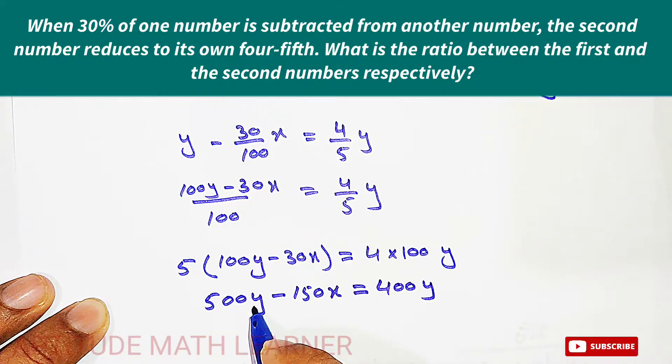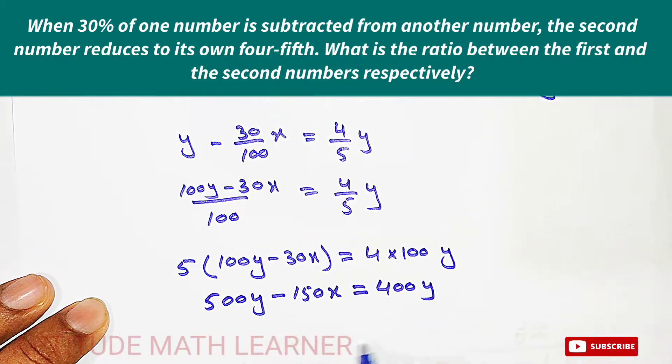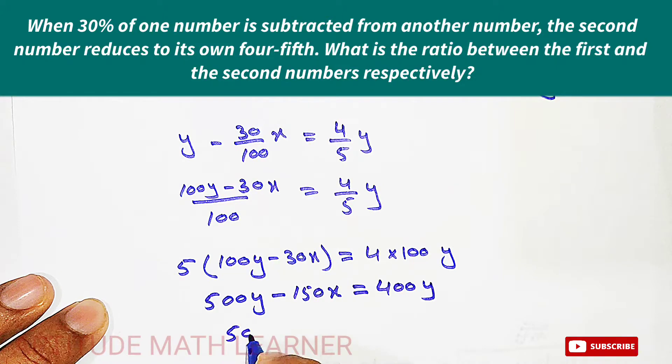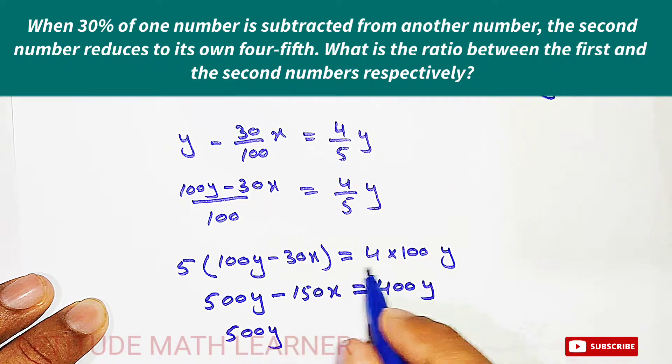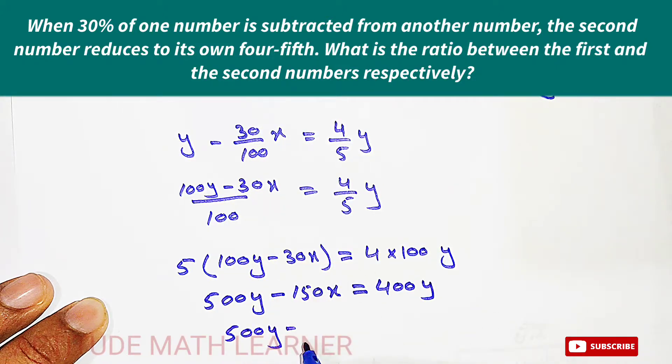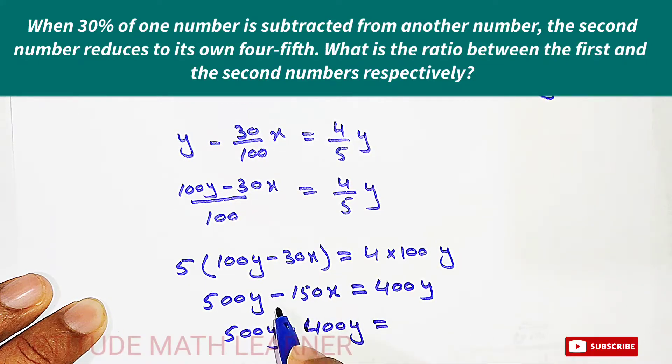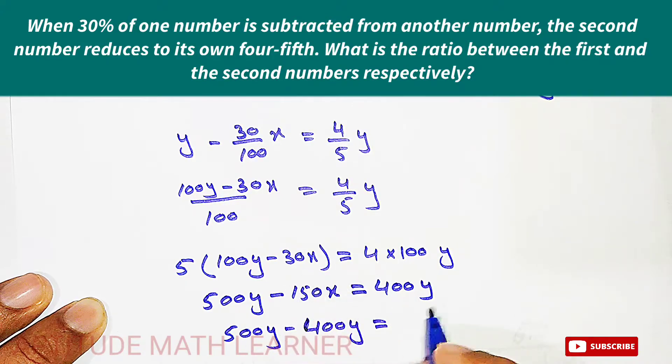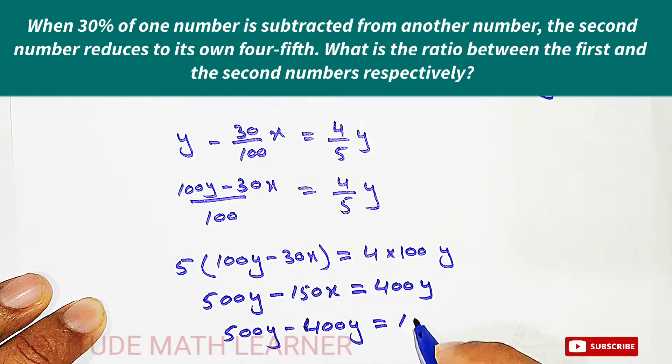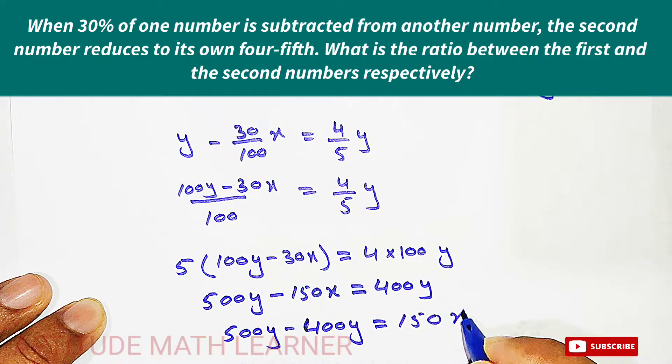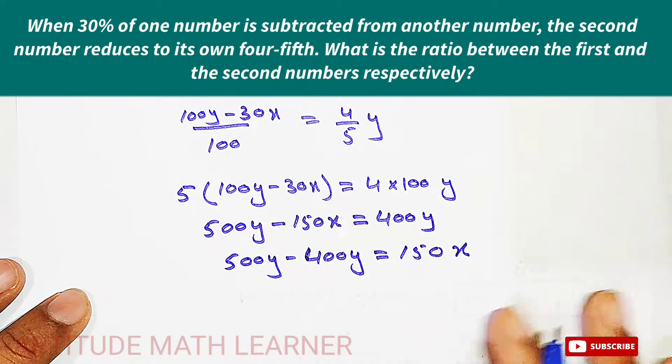And now if you see this is y and this is also y, so this becomes 500y. And this portion goes this side and becomes minus 400y, and this portion we bring it here and it becomes plus 150x. And now we get here 100y is equal to 150x.